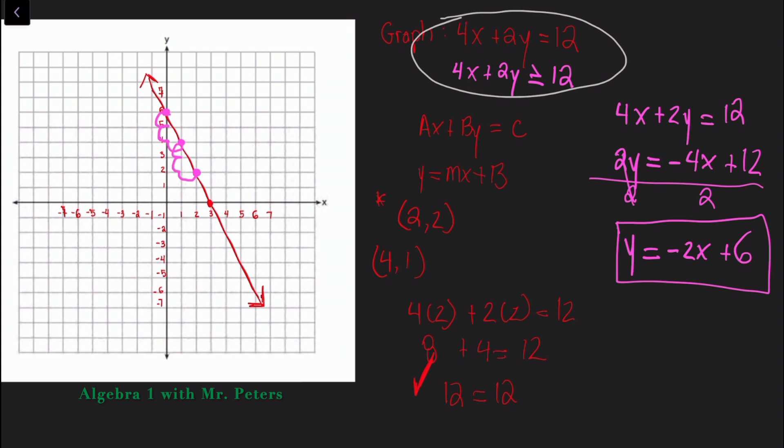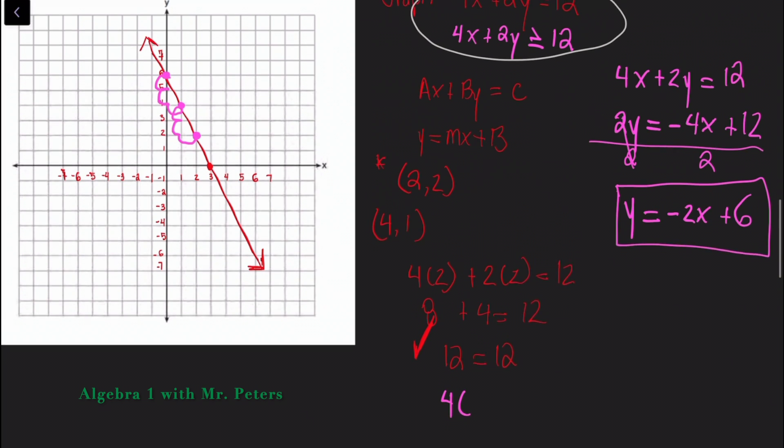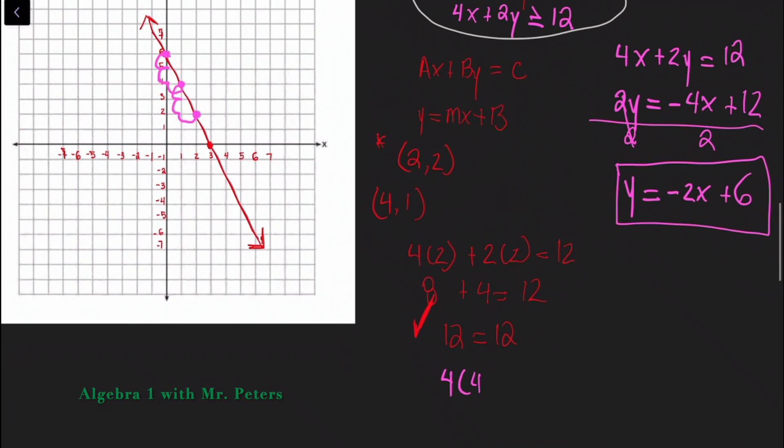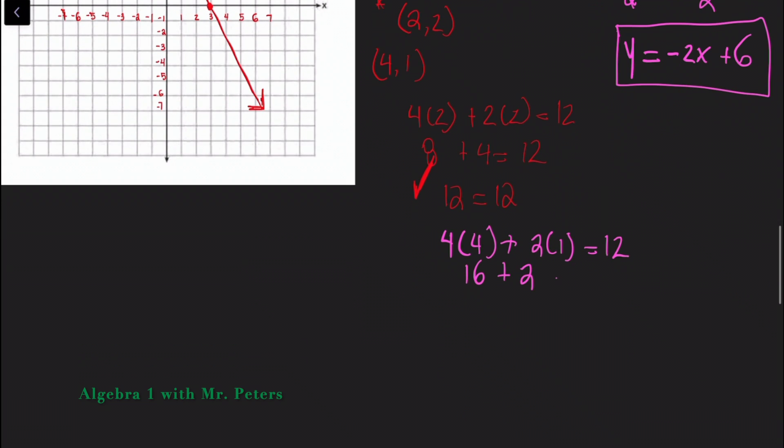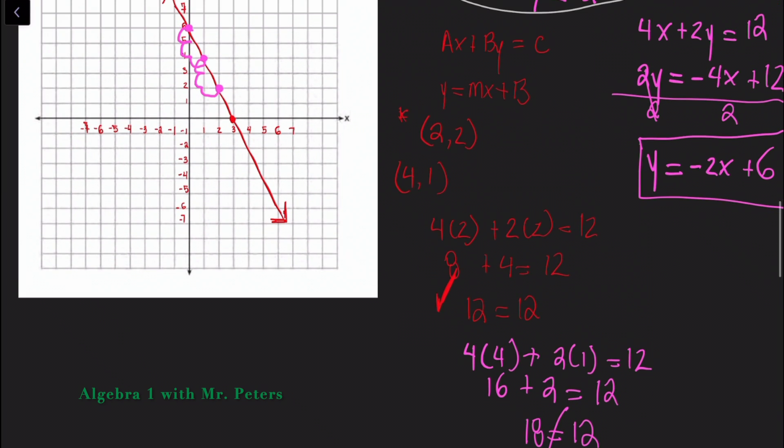Now I'm going to switch over to pink and let's do our second point 4, 1. So now I have 4 times 4 plus 2 times 1 is equal to 12. You guys should know that this is false. 16 plus 2 is not equal to 12. 18 is not equal to 12, so we know that this point 4, 1 would not fall on the line that we just grabbed.